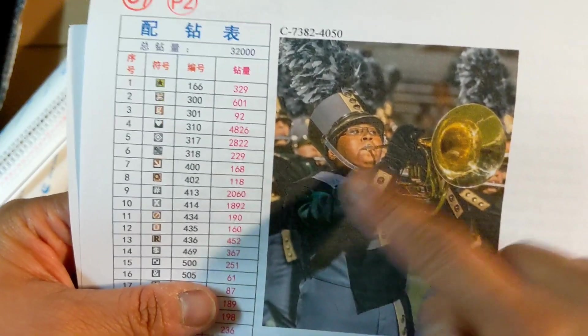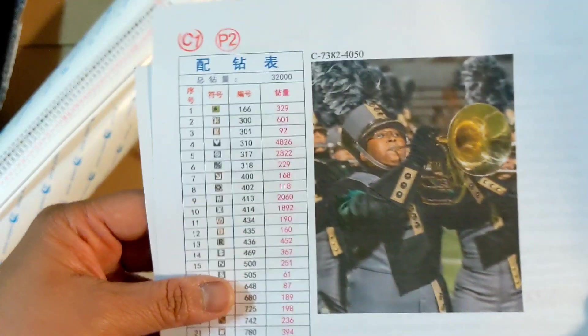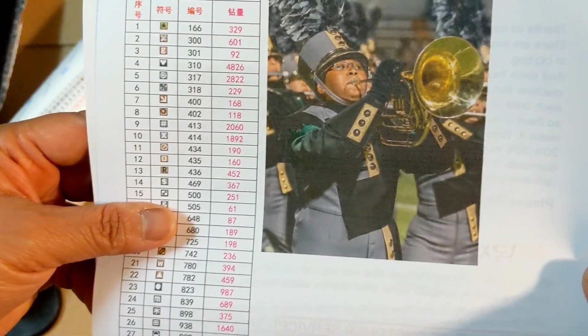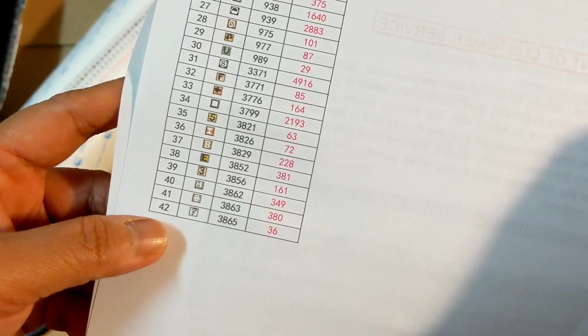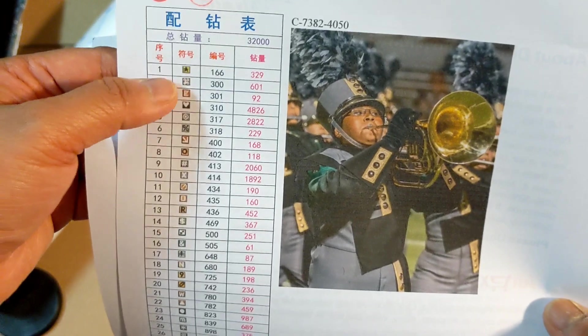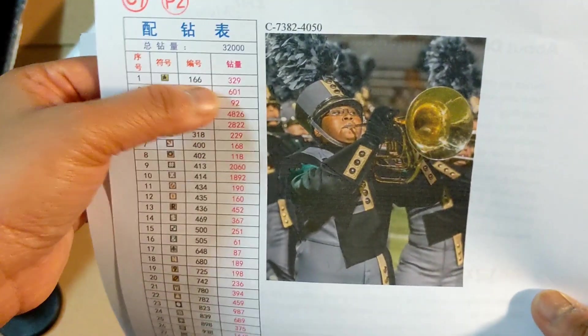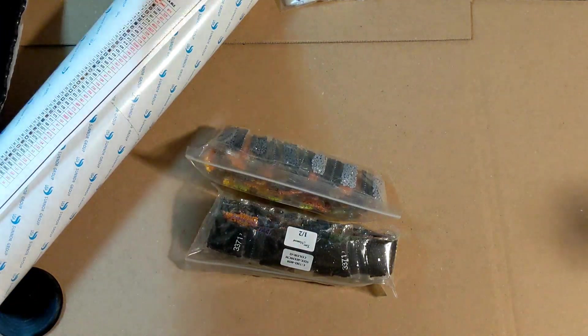I don't see many colors, but they gave me 42. We have the checklist here with the numbers, the symbols, drills, the DMC code, and the amount of drills. Let's take a look at the thumbnail. The thumbnail is a little bit on the dark side, so I hope it's not too dark when I'm going to apply the drills.